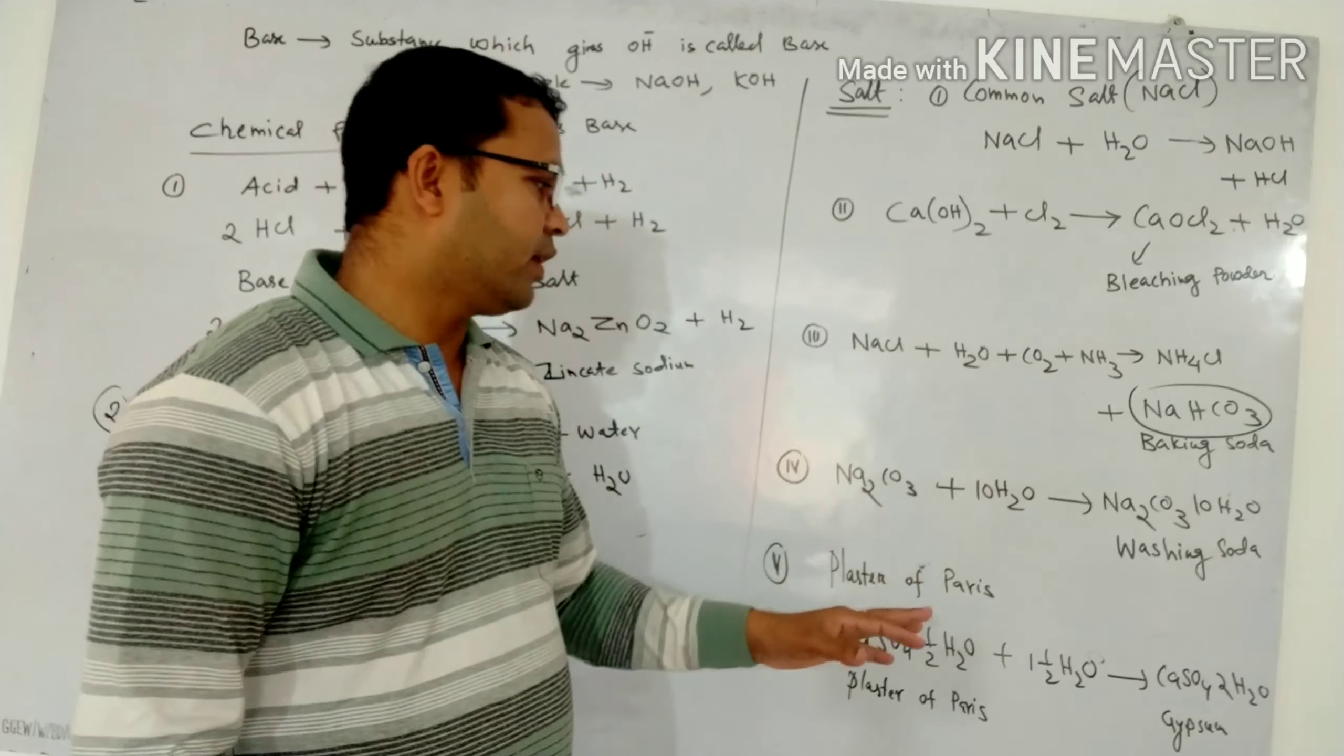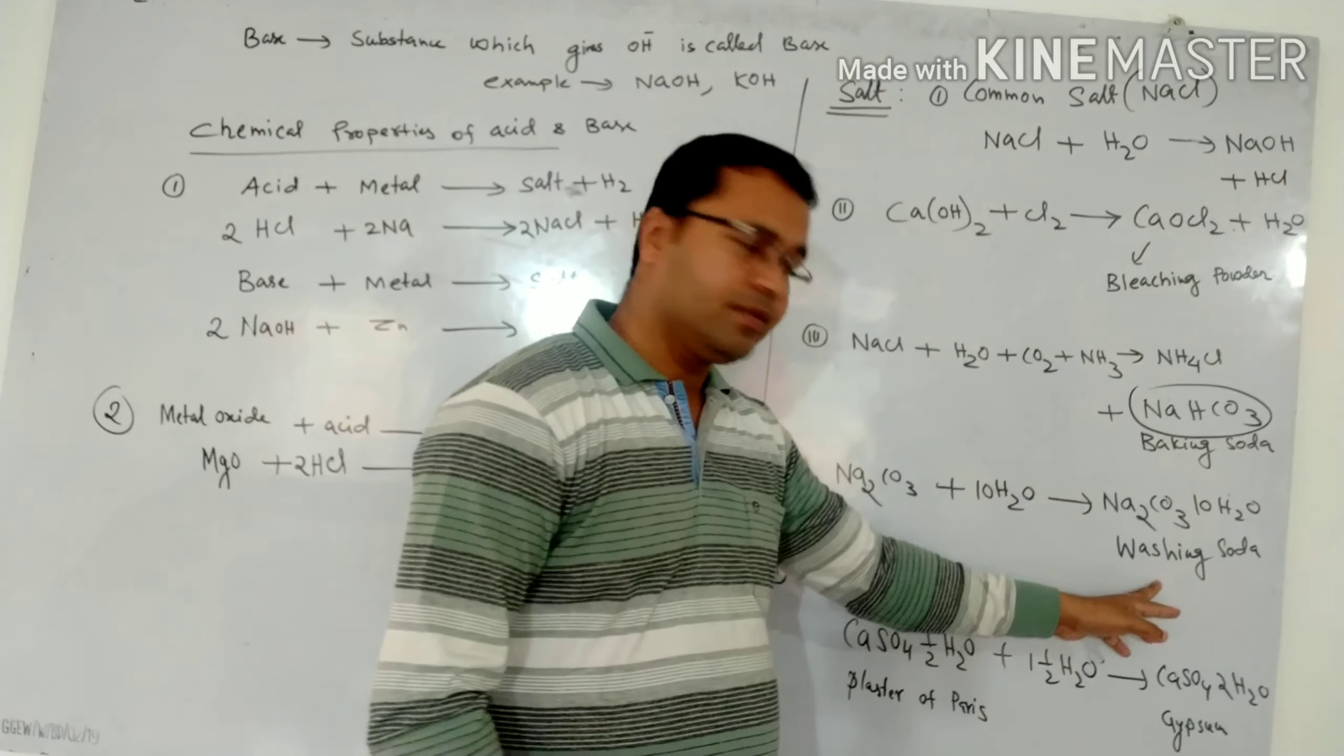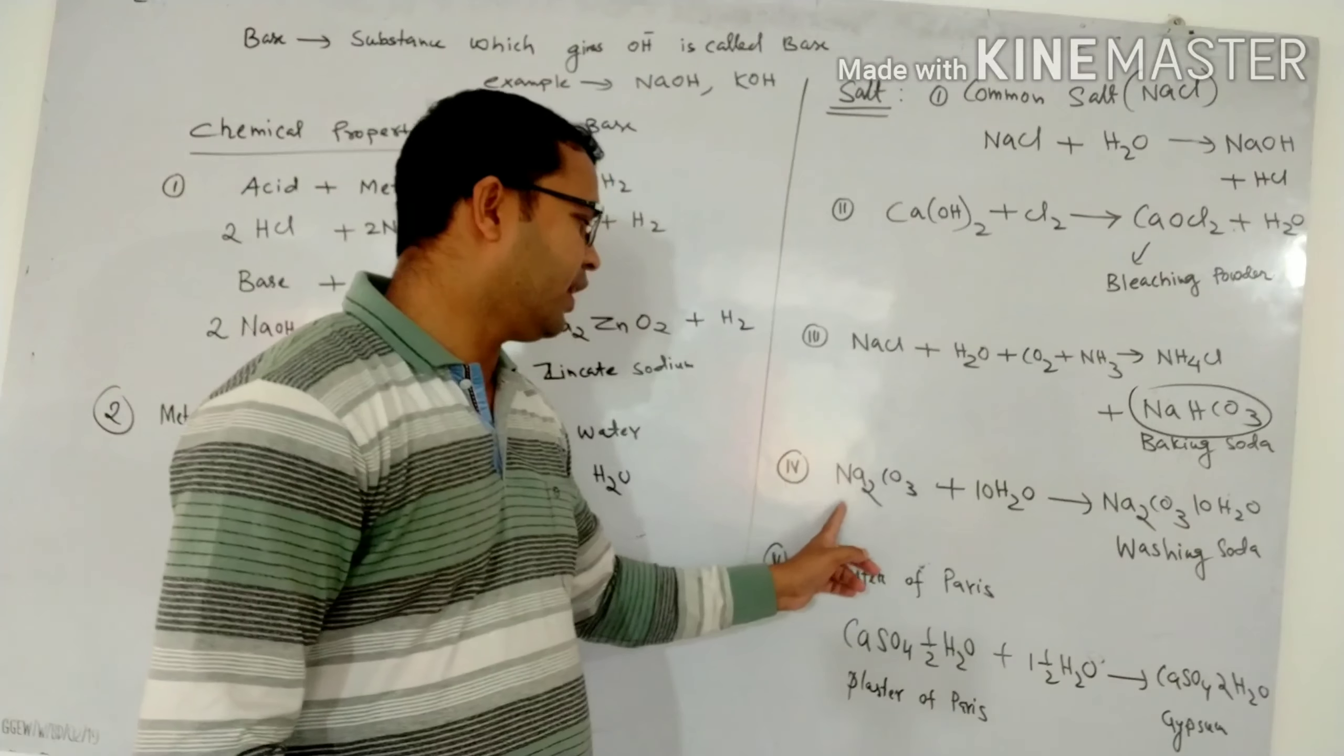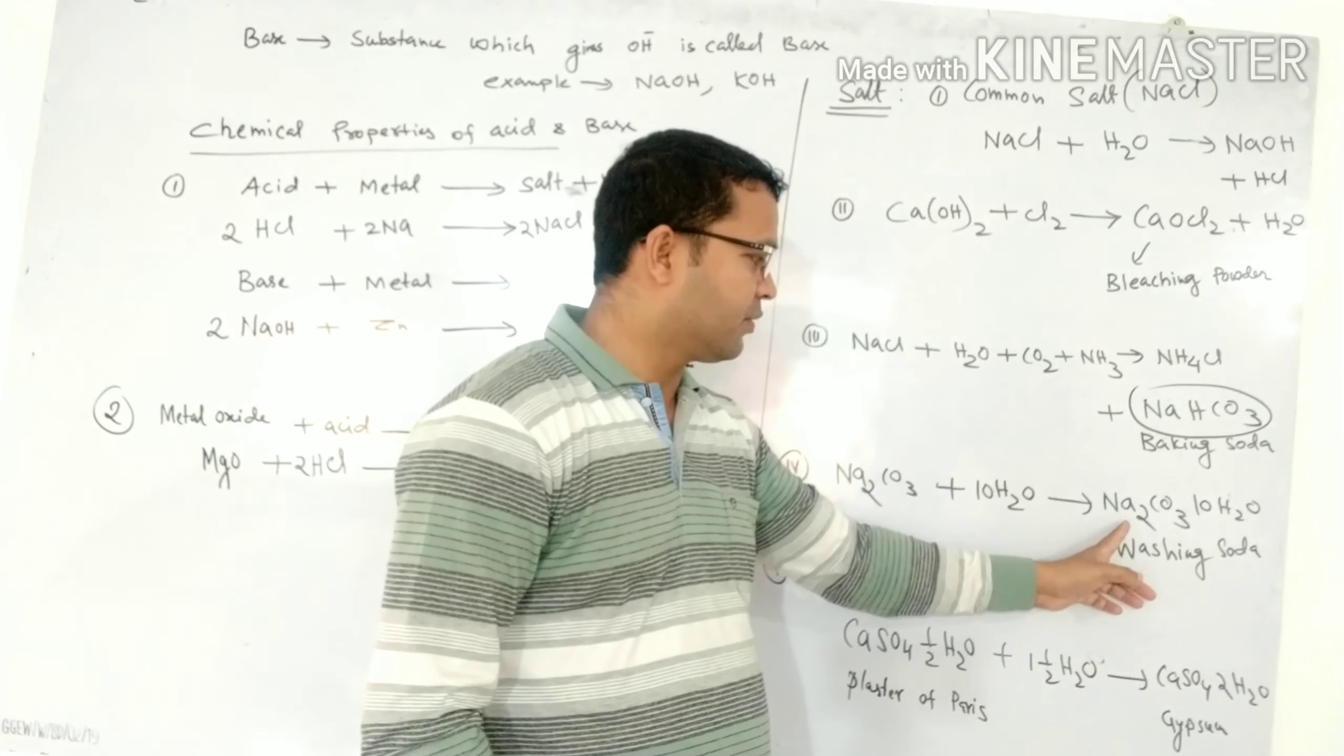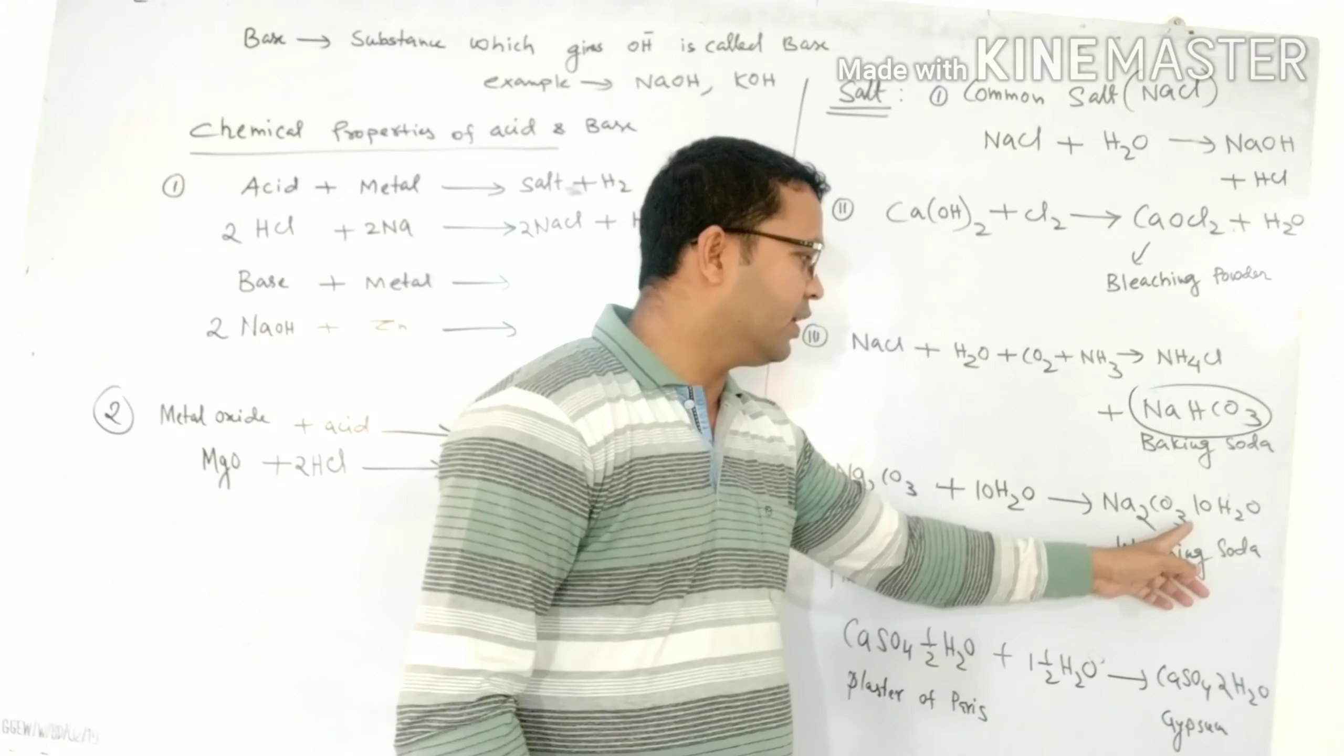And fourth one is washing soda. When sodium carbonate Na2CO3 get with water gives washing soda. The formula of washing soda is Na2CO3·10H2O.